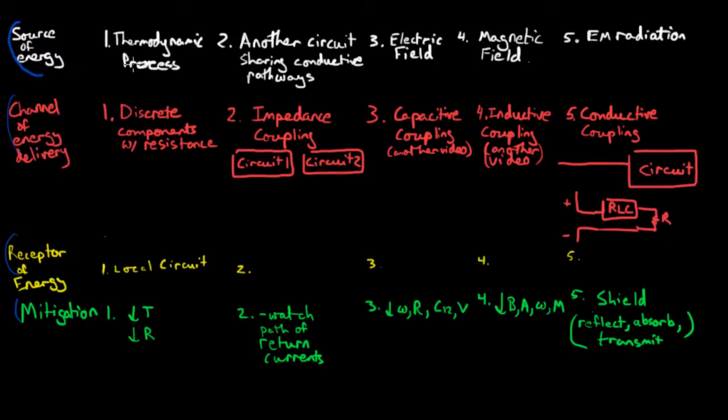First up, the source of energy, the thermodynamic process. And this is the only one of these five components that you can't solve with electromagnetic equations, with Maxwell's equations. And by this I mean thermal noise or contact noise. Thermal noise has a white characteristic, it's frequency independent, and contact noise has 1 over f. This has to do with electrons diffusing back and forth within a resistor or between contacts. The channel for energy delivery in this case is any kind of discrete component that has a resistance. Mostly what you're going to be worried about is thermal noise, which is directly related to resistance, it's proportional to resistance.